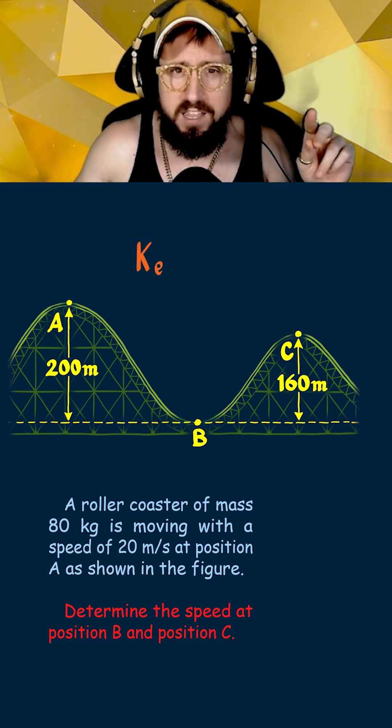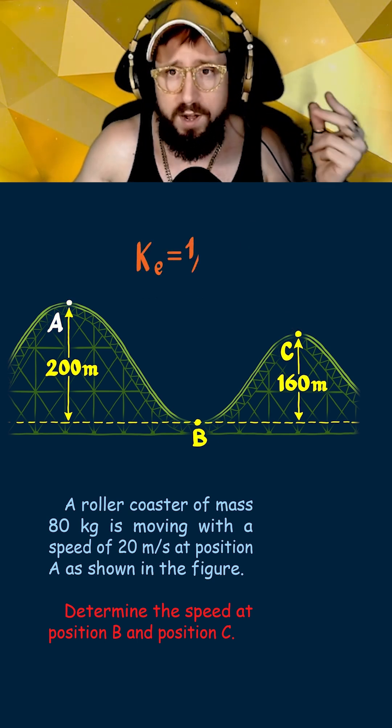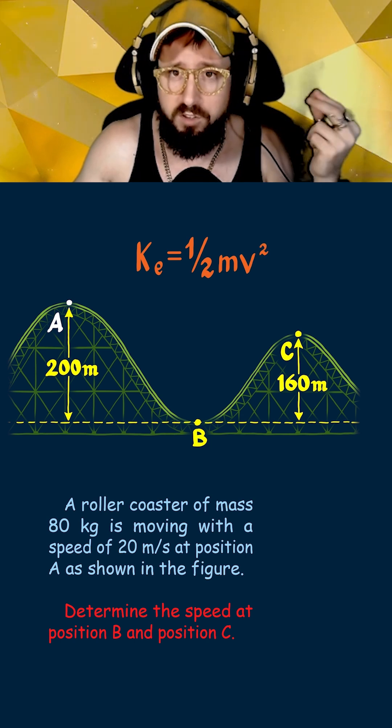The first thing we're going to do is calculate the kinetic energy at point A, which is equal to one-half times the mass times the velocity squared.